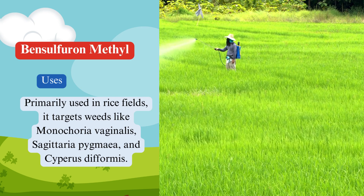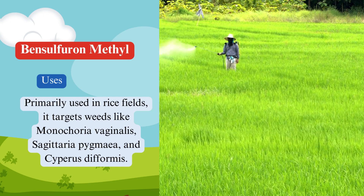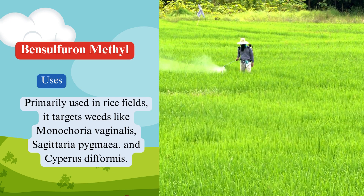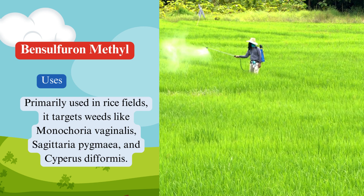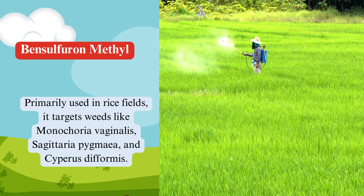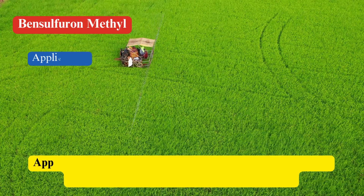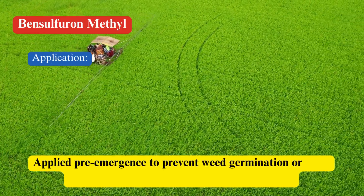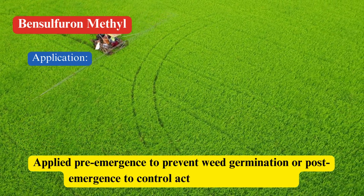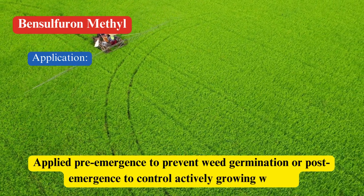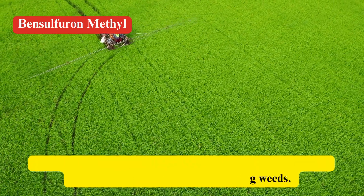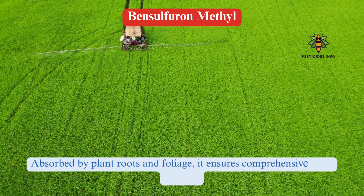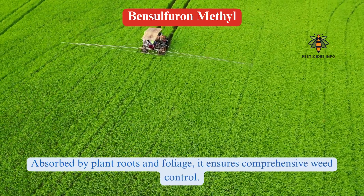Uses. Primarily used in rice fields, it targets weeds like Monochoria vaginalis, Sagittaria pygmea, and Cyperus deformis. Applied pre-emergence to prevent weed germination, or post-emergence to control actively growing weeds. Absorbed by plant roots and foliage, it ensures comprehensive weed control.